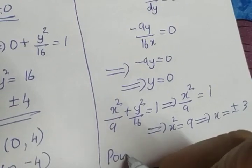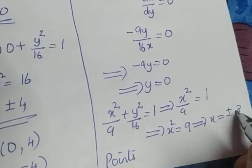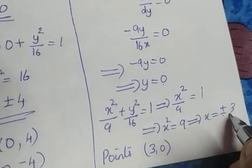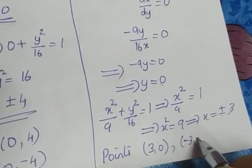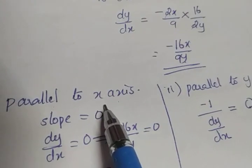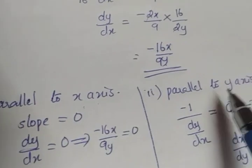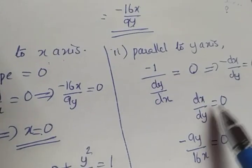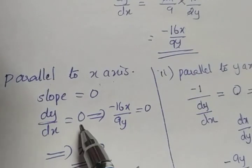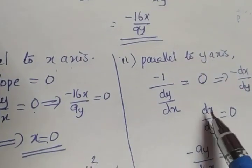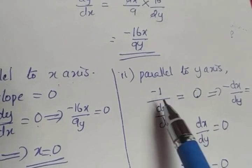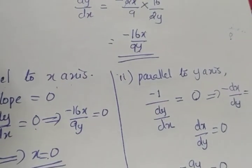So x takes two values, +3 and −3, with y = 0. The points are (3, 0) and (−3, 0) when the tangent is parallel to the y-axis. To summarize: when the tangent is parallel to the x-axis, set dy/dx = 0; when parallel to the y-axis, set dx/dy = 0, because the slope is undefined and we use the slope of the normal.